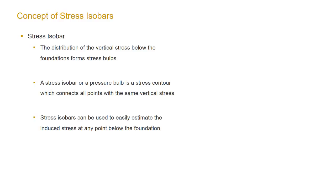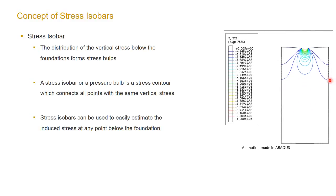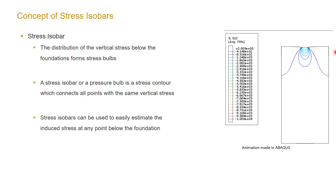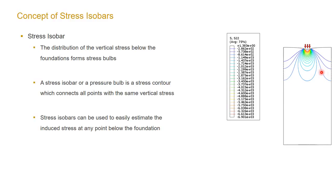One of the convenient ways to evaluate stress in a soil mass is employing the concept of stress isobars. A stress isobar, or pressure bulb, is a surface below a specific loading type which has the same stress value. It is called a pressure bulb because when pressure is applied to the surface of the soil mass, the stress contours form a bulb shape. This animation shows the development of stress contours below a strip footing. As you can see, increasing the load increases the surface deformation, the stress magnitude, and extends the affected area in the soil mass.